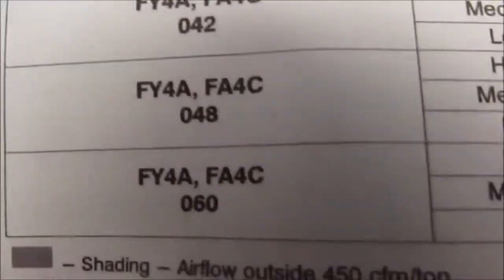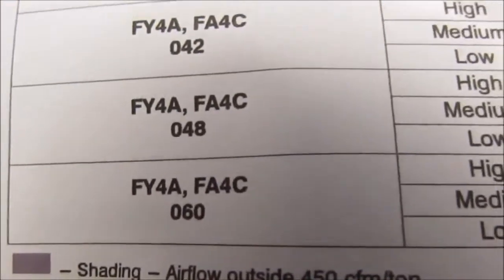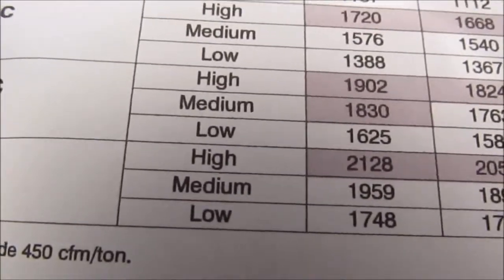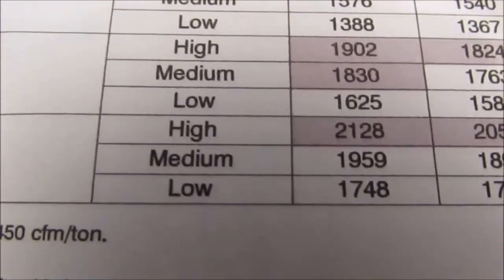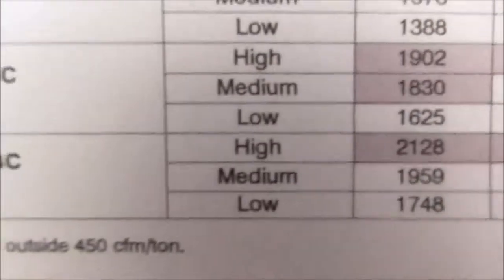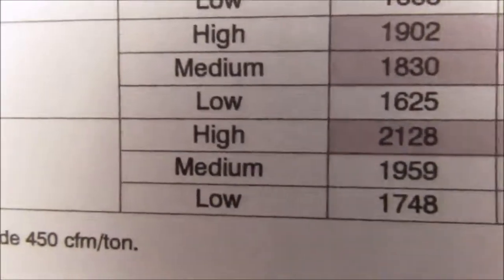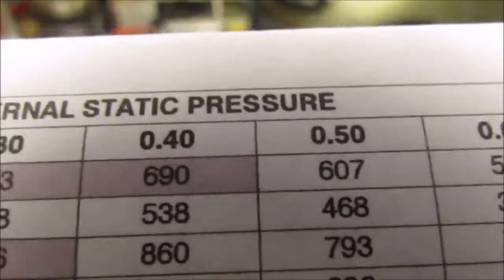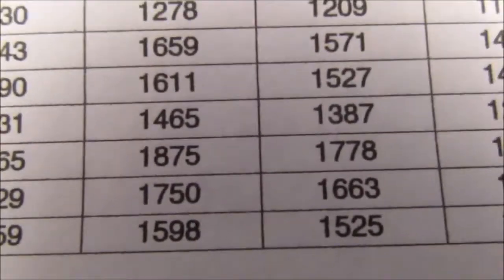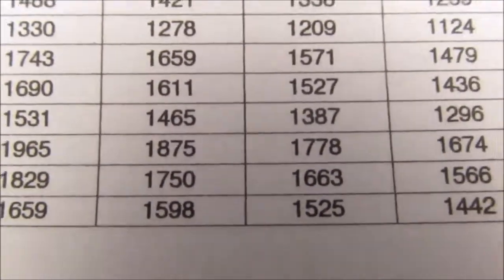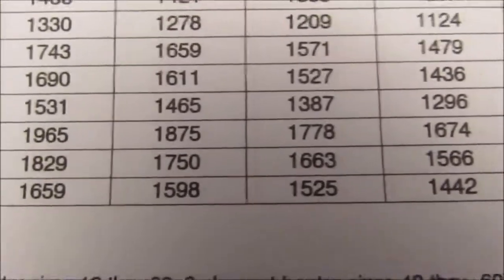If you measure your static pressure, you go down to this table. Select the air handler you have - mine is 60,000 BTU, which is five ton. Pick the row for the fan speed you have selected - I'm using medium right now. My static pressure is around 0.5, so at medium fan speed for five ton, it'll be 1663 CFM.